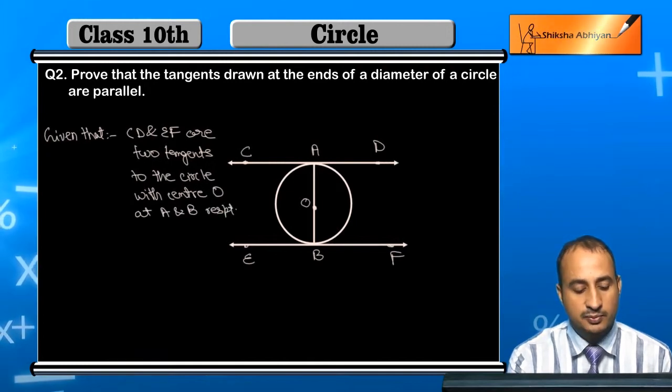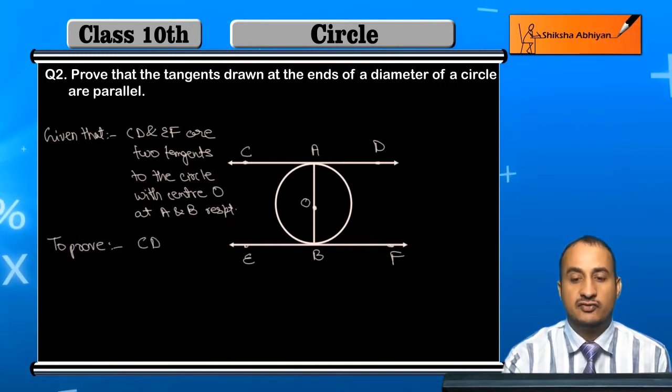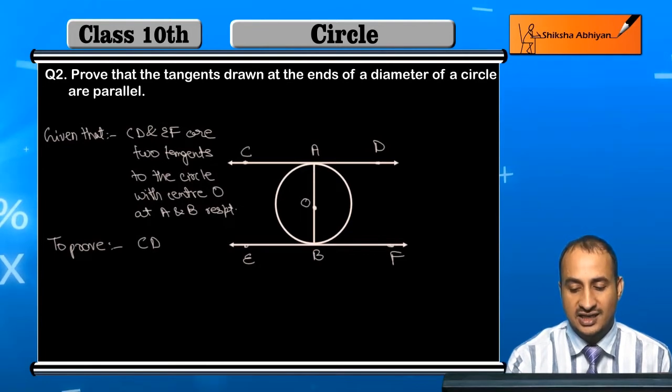Here we have to prove that CD is parallel to EF. The tangents are at both ends of diameter AB, so CD is parallel to EF. This is what we have to prove, students.